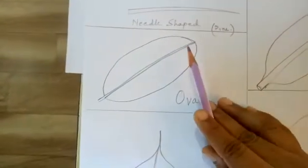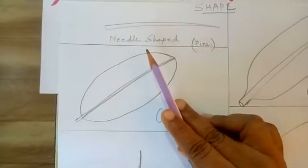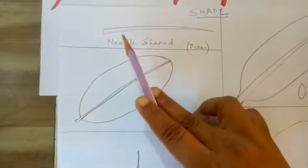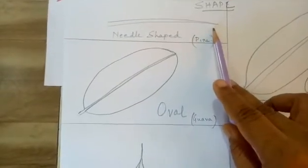First one is needle shaped. As the name suggests, you see the shape of the leaf will be like a needle. The example is pine and also onion.